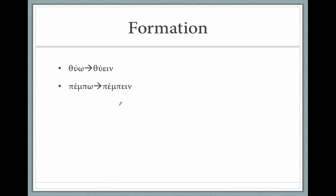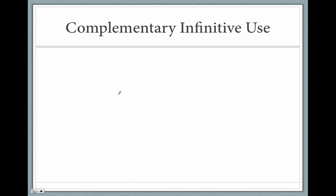How to use it? The first use we're going to encounter, the only one in this chapter, is the complementary infinitive. This completes the idea of another verb. When we get the idea of I am able, I am able to do something, I'm able to send. Or in the example here, ethelo basileuein. Ethelo, I want, what do I want? I want to be king. So here's our complementary infinitive. Ethelo basileuein, I want to be king.